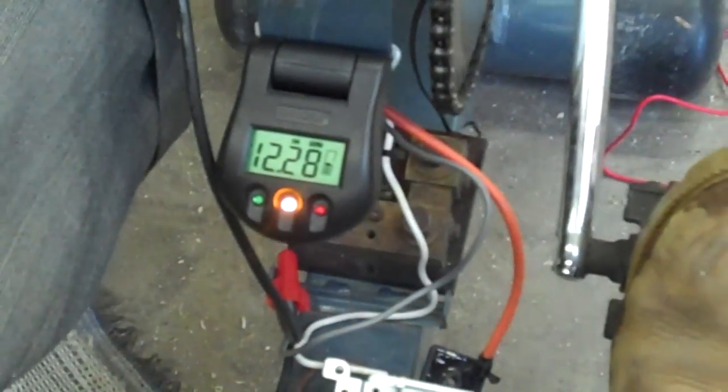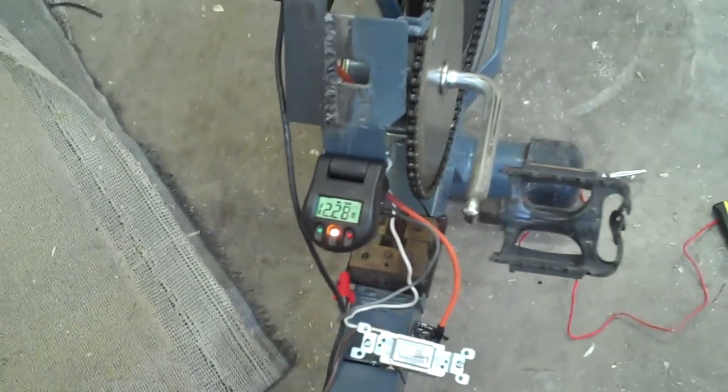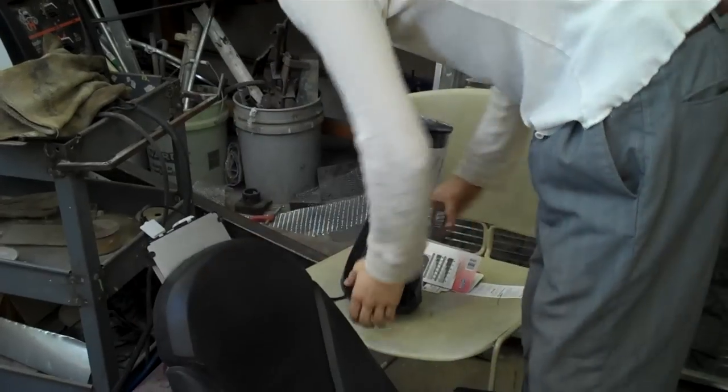And so back here we have a blender hooked up. Make sure this is on. And now that we have electricity in the battery, we can turn the blender on.